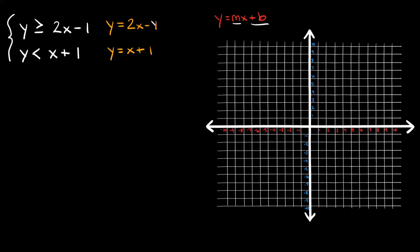For y equals 2x minus 1, the negative 1 is our y-intercept, so I'll plot a point on the y-axis at negative 1. The slope is equal to 2, which I can write as the fraction 2 over 1 — the rise is 2 and the run is 1. Starting from that point, we go up 2 and over 1. Now I have two points and can draw a straight line.